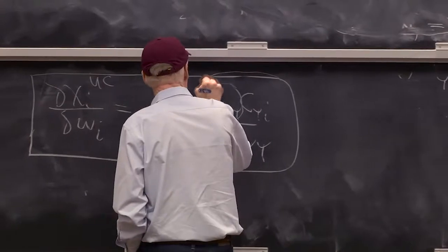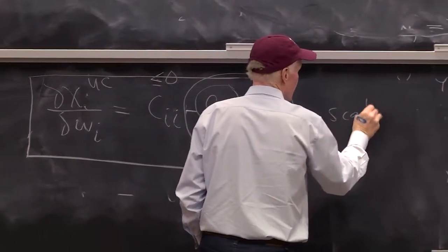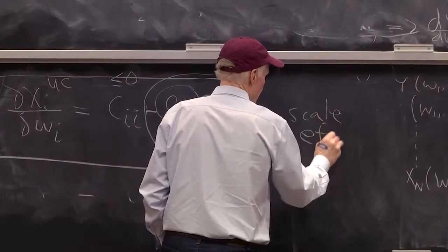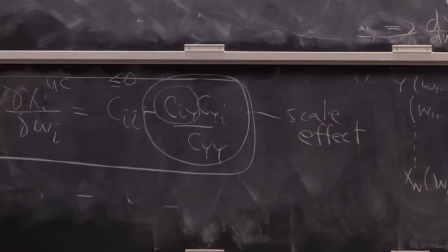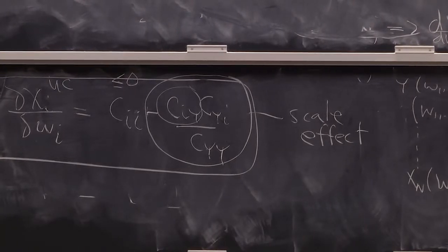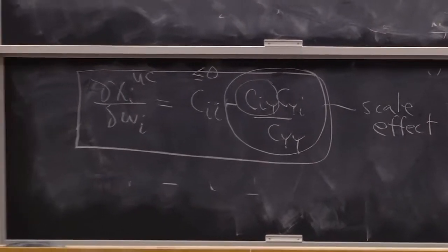This is called, this whole term, is what we call the scale effect. Right? It's not an income effect. It's the scale effect. It's the effect of this factor price on the scale of the firm's output.